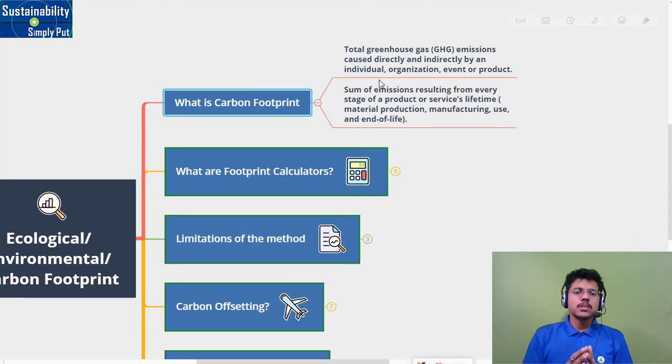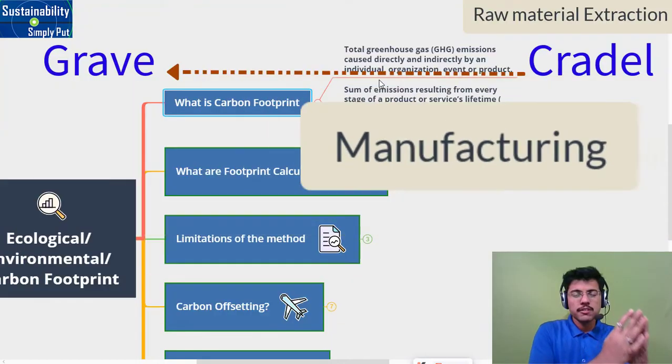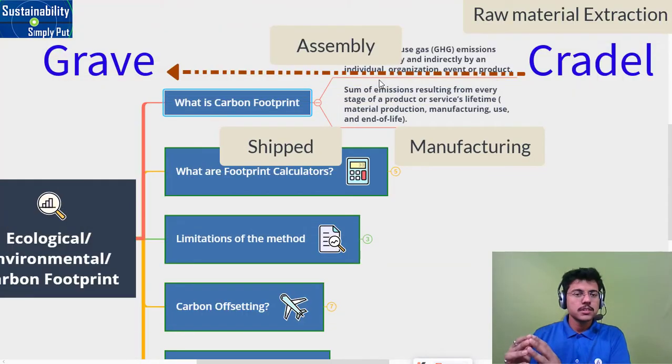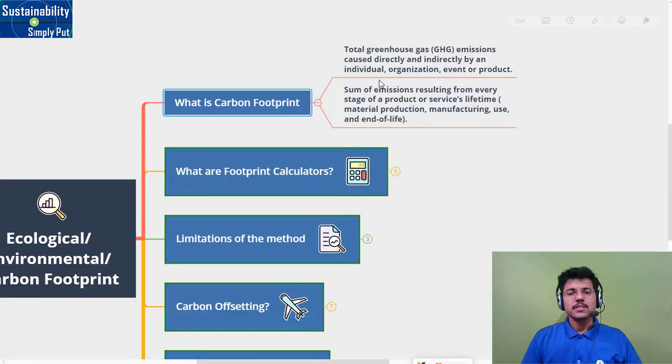These emissions can be from the product. If we talk about its complete life cycle - life cycle means from cradle to grave - when the raw materials are extracted, then it's manufactured, assembled, shipped, used, discarded, and its end of life. This complete life cycle is considered and accordingly how much emissions are caused by this product. Or if we talk about us as human beings, we also consume a lot of energy and resources. How much emissions are emitted due to the activities is reflected in this carbon footprint.